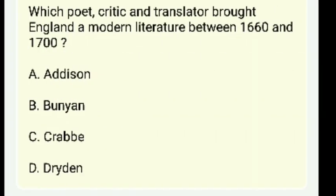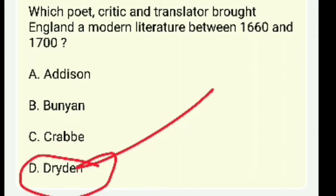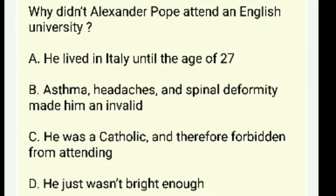Which poet, critic, and translator brought England modern literature between 1660 and 1700 — Addison, Bunyan, Crabbe, or Dryden?